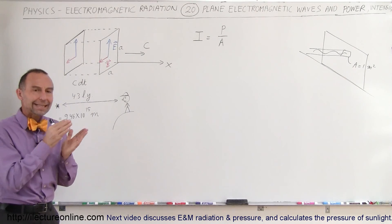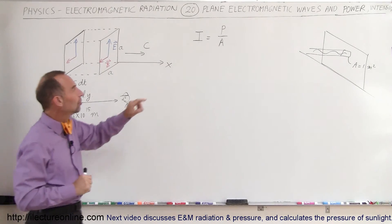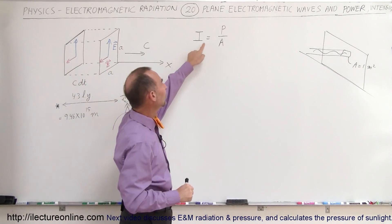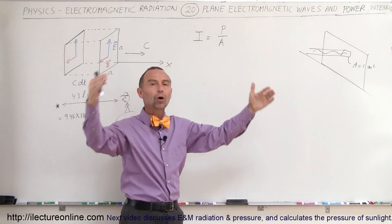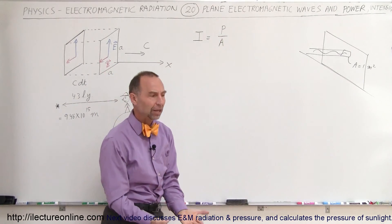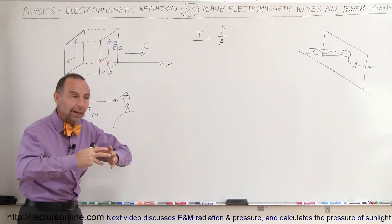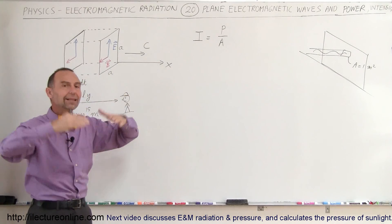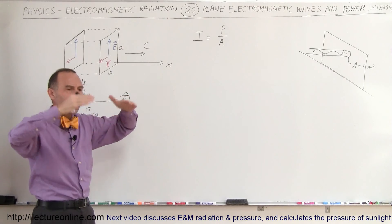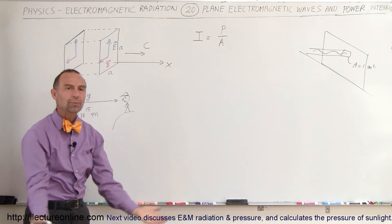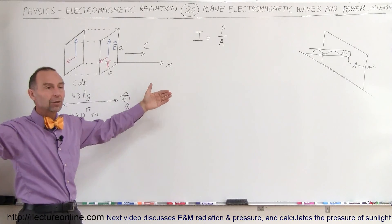How do we calculate the intensity at a distance? We use this equation: intensity is equal to the power of the source divided by the area over which it spreads. Typically, objects spread the radiation in all directions — radially outward — so it moves out as a wave, and the wave front will be a spherical-shaped object getting bigger and bigger.